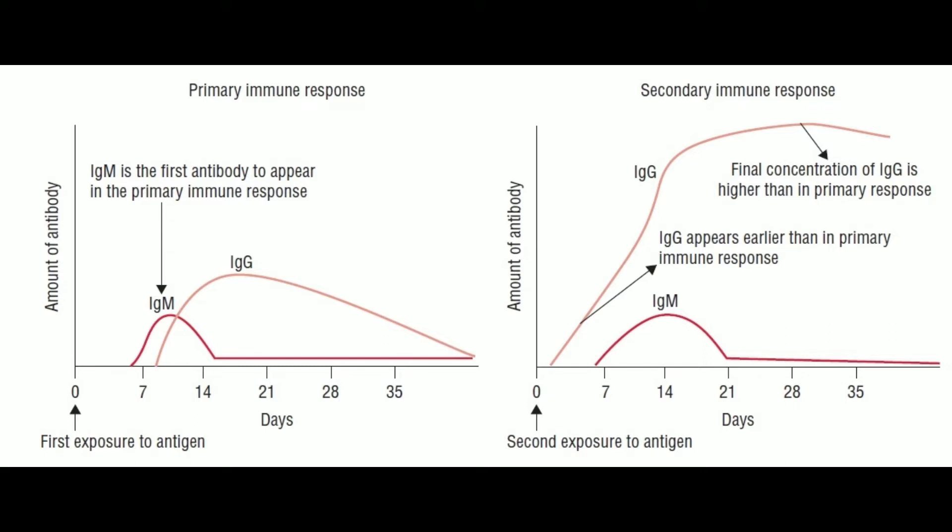A secondary immune response is elicited when the same antigen stimulates memory B cells, leading to the production of greater quantities of specific antibodies than are produced in the primary response.